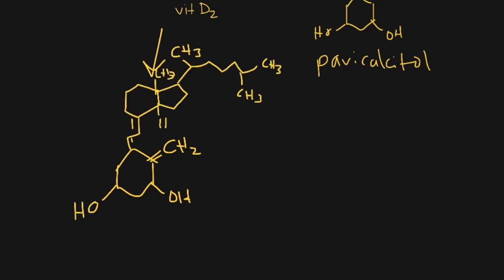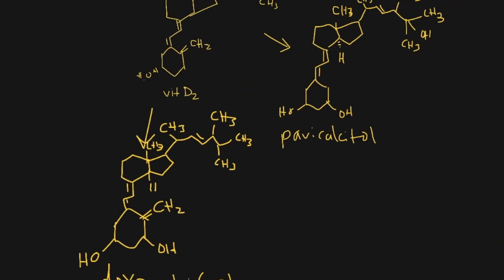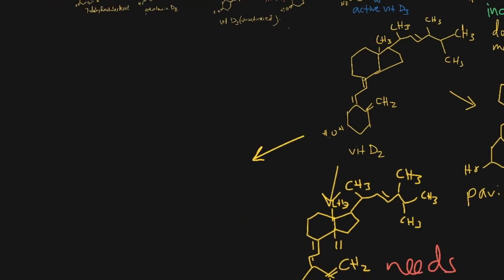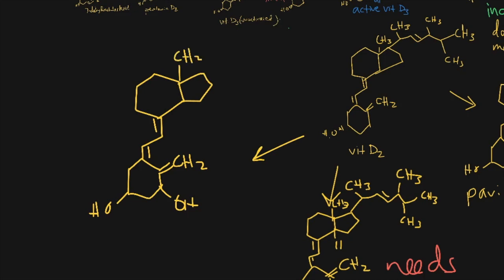The next molecule is doxercalciferol. Why is it a vitamin D2 analog? It has a double bond in the middle and the methyl group. Is it active? It's inactive because while you need both the 1-hydroxy and the 25-hydroxy, it is missing the 25-hydroxy. So it is inactive and needs activation.